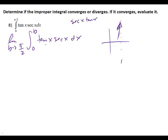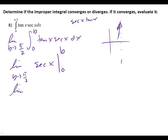So when we integrate secant x tangent x or tangent x secant x, what do we get? Secant x. Good. So the limit as B approaches pi over 2, we get secant x from 0 to B. The derivative of secant is secant tangent. Let's substitute in: secant of B minus secant of 0.